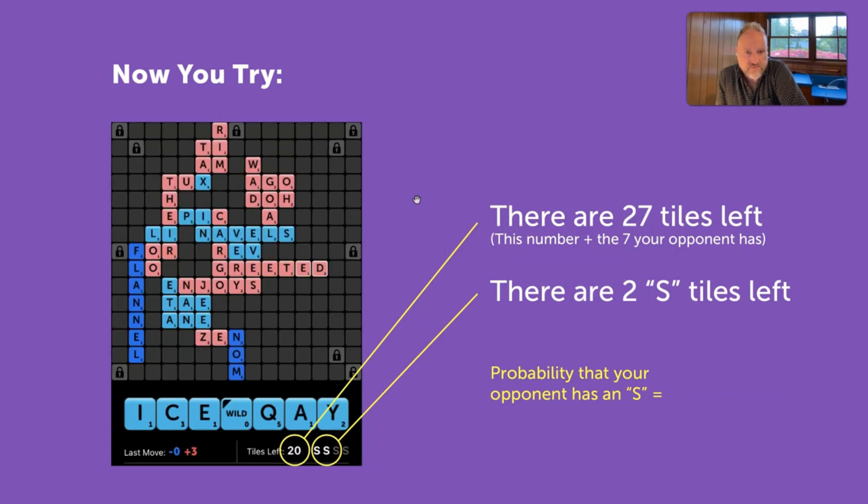Let's try one more. 27 tiles left. 2 S tiles left. Alright, I am going to show now 46%. So, this is a very high number, and there are 27 tiles left. So, if my theory is correct, this number would be even bigger than that.